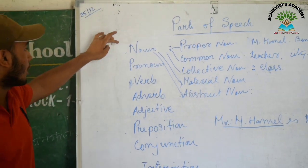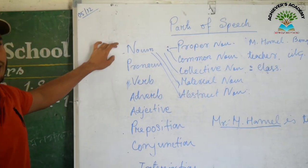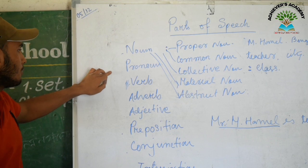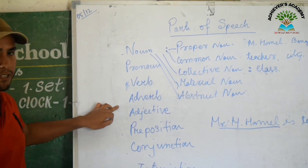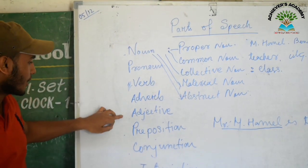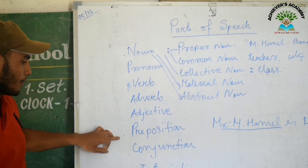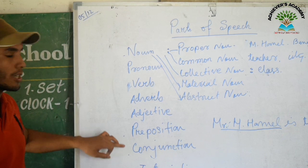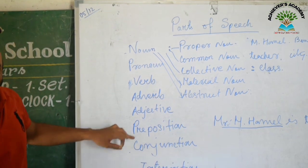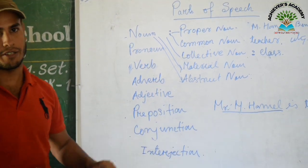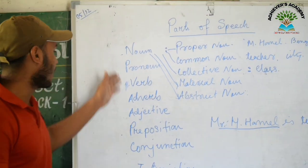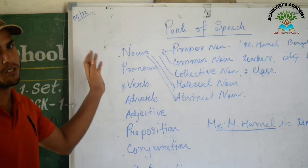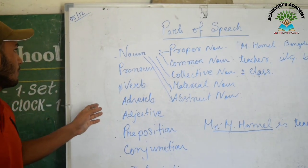A noun, pronoun, verb, adverb, adjective, preposition, conjunction, and interjection. These are all names — these are the eight parts of speech.